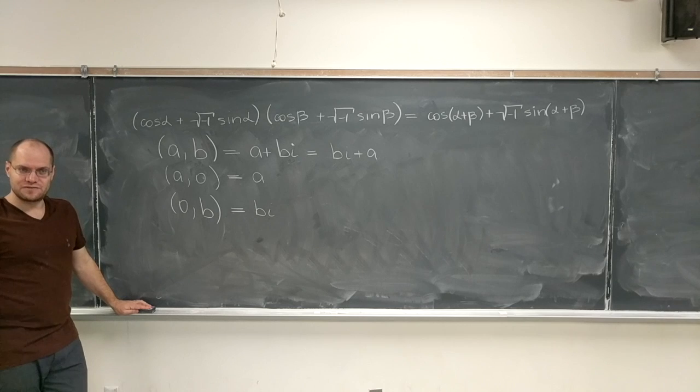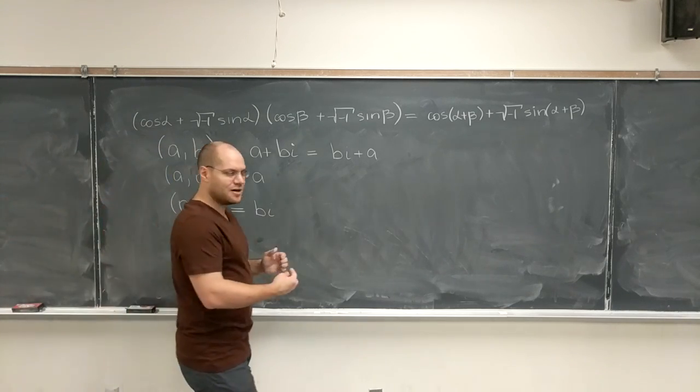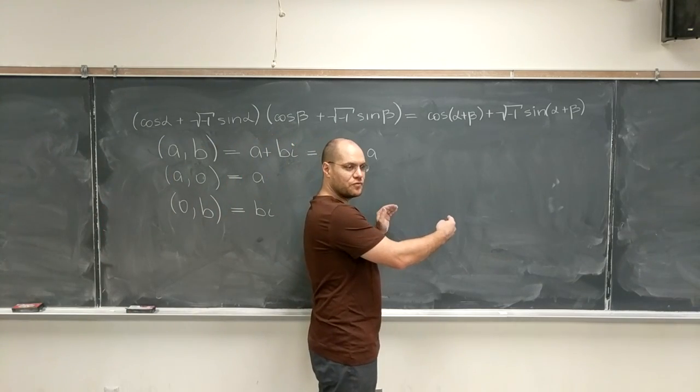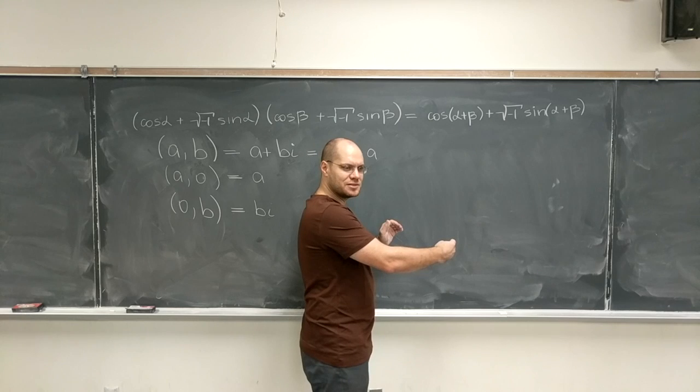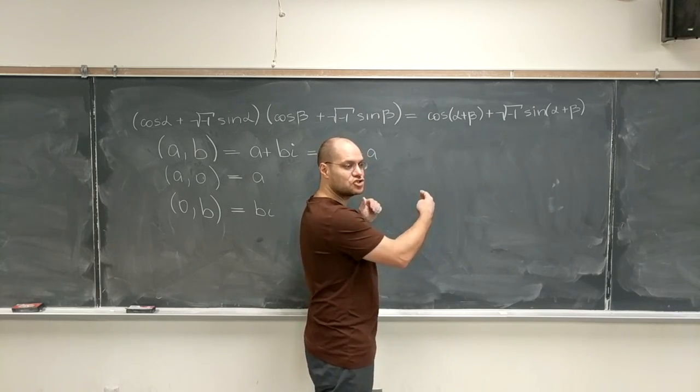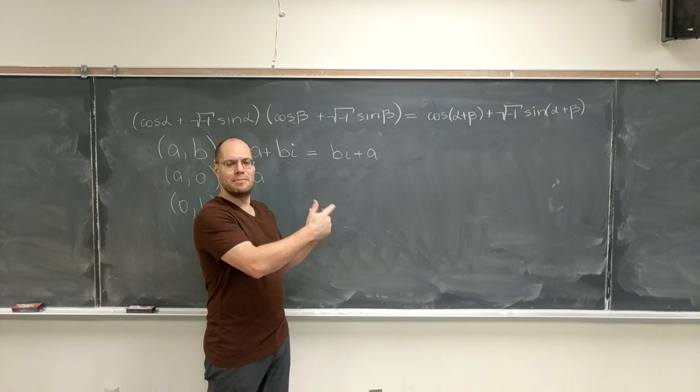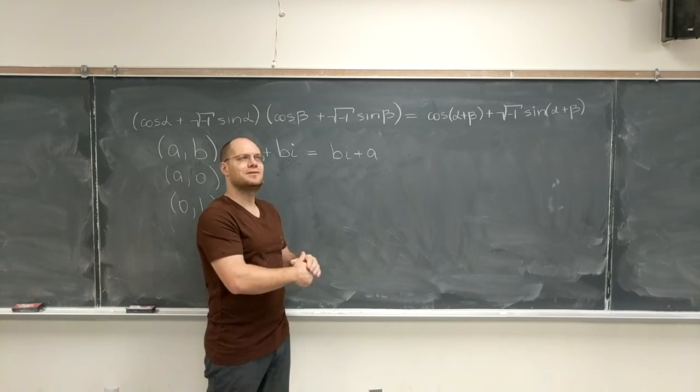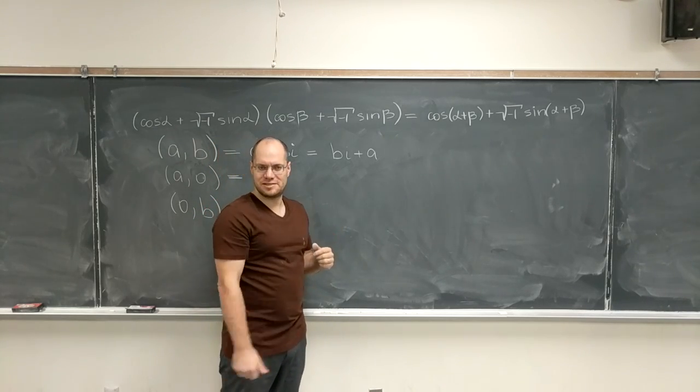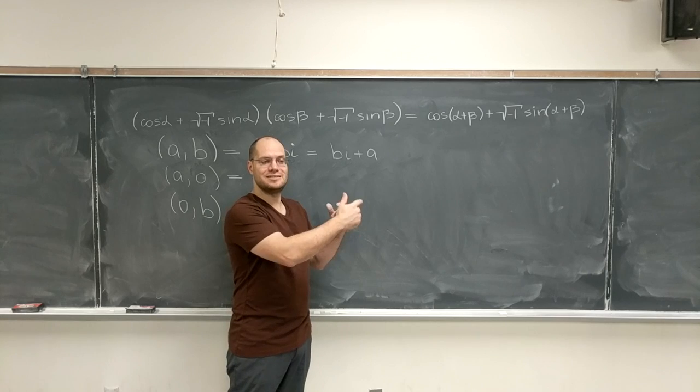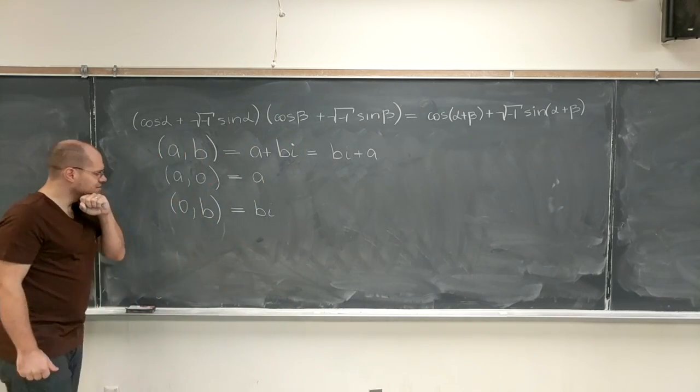It also allows us to write this as bi plus a, so we don't have to pay so much attention to the order, because this placeholder, this symbol, tells us that whatever it multiplies is the second pair in the number. That's another nice feature. It also allows us to write bi when we mean the pair (0, b). Yet another function of the symbol i is to remind us of that formula for multiplying complex numbers that looks so cumbersome, that has ac minus bd, plus ad plus bc—not plus, comma—ad plus bc, that formula.